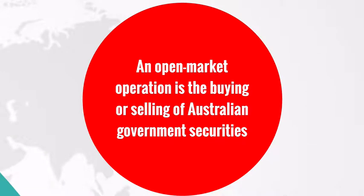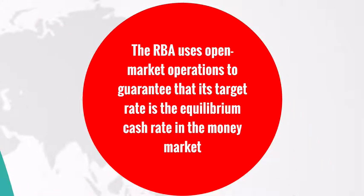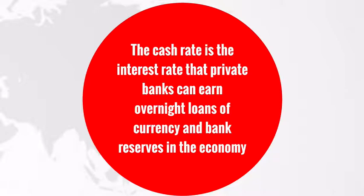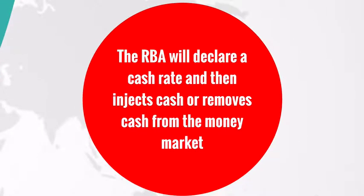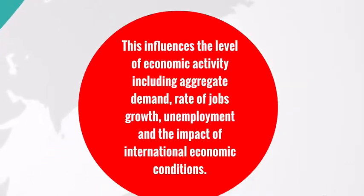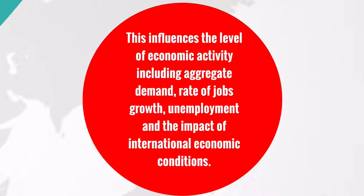An open market operation is the buying or selling of Australian government securities. The RBA uses open market operations to guarantee that its target rate is the equilibrium cash rate in the money market. The cash rate is the interest rate that private banks can earn on overnight loans of currency and bank reserves in the economy. The RBA will declare a cash rate and then inject cash or remove cash from the money market. This influences the level of economic activity, including aggregated demand, rate of job growth, unemployment, and the impact of international economic conditions.